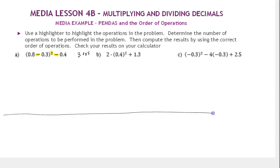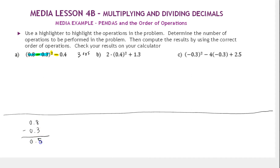Let's make room to do our work. The first thing we need to do is 0.8 minus 0.3 because that's in parentheses. That's 8 tenths minus 3 tenths, which is 5 tenths — you can line up the decimal points and subtract. So now we have 0.5 squared minus 0.4.